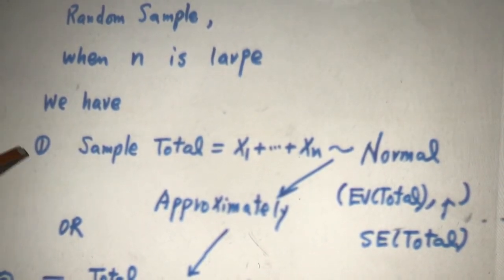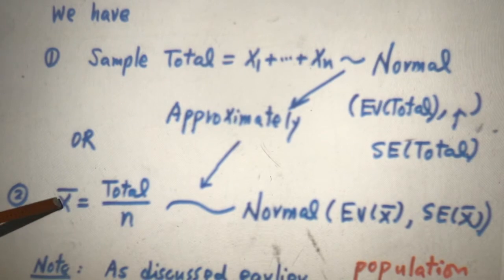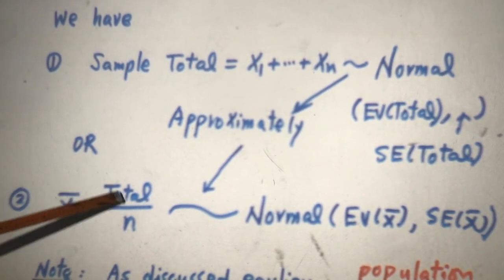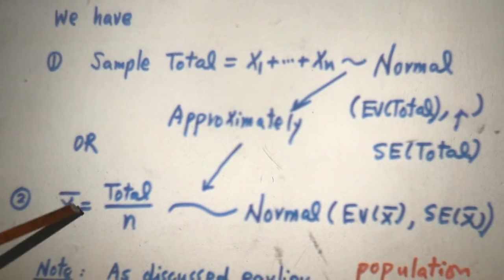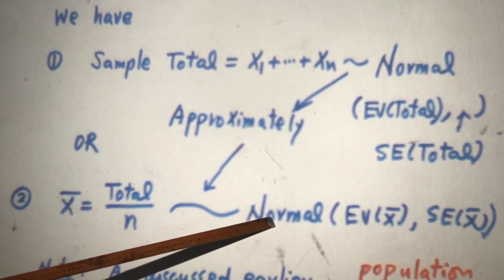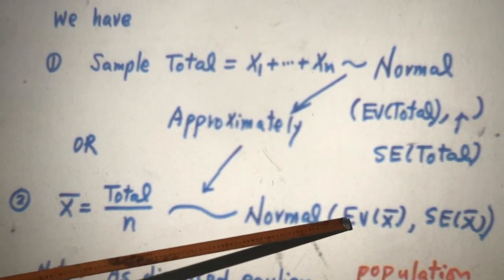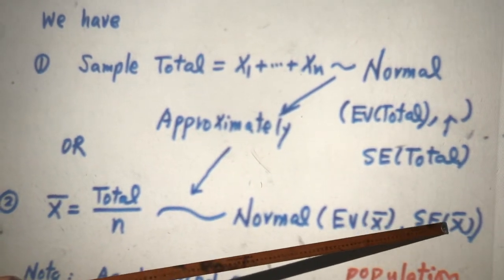Or the other version is you talk about sample mean, that is sample total over N. When sample size is large enough, sample mean will also follow approximately normal with EV sample mean and SE sample mean.